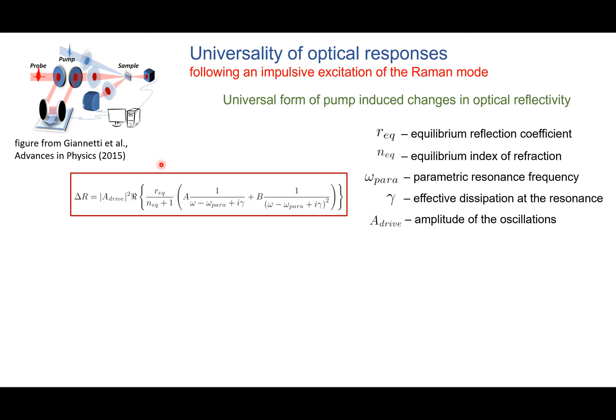The drive frequency is the frequency of the collective mode we excite, but an IR-active collective mode can only modulate the index of refraction at twice its frequency. So depending on the symmetry, in some examples we can excite directly a collective mode like a Higgs which linearly modulates the index of refraction. In other cases it's quadratic. Sometimes whatever you excite is not exactly at the frequency at which you drive. In the case of YBCO, you drive at the frequency of the apical oxygen phonon — there are two of them, roughly separated by 3 THz — and this drive excites Josephson plasmons.